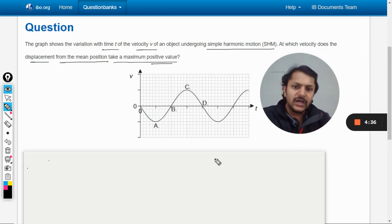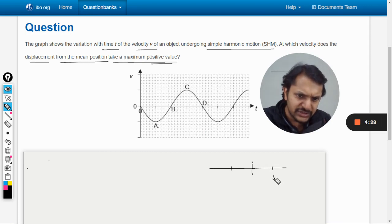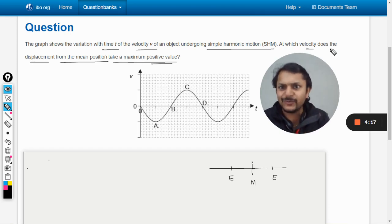Let us take the case of a spring mass system. I'm just drawing the mean position here and these are the two extreme positions - this is extreme right and this is extreme left. They want you to find at which velocity does the displacement from the mean position take a maximum positive value.